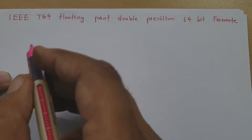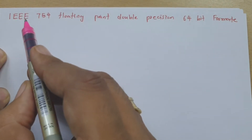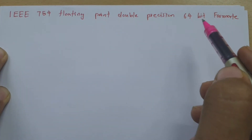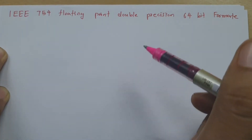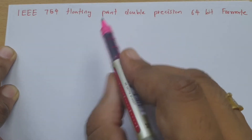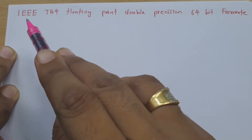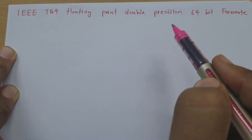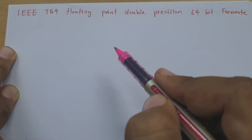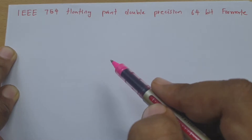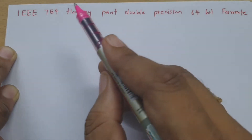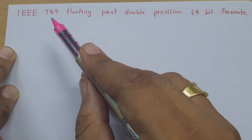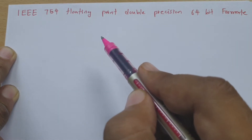Welcome to Engineering Funda channel. Professor Itesh Dholakia is going to explain IEEE 754 Floating Point Double Precision 64-bit Format in this session. How to convert a given number into IEEE 754 Floating Point Double Precision 64-bit Format is what we will study. First I will explain the steps we need to follow to represent any number in 64-bit IEEE 754 Floating Point Double Precision Format.